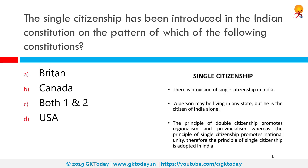The single citizenship has been introduced in the Indian Constitution on the pattern of which of the following constitutions? The correct answer is both Britain and Canada. The Constitution of India has established a single and uniform citizenship for the whole of the country. A citizen in a federal state owes allegiance firstly to the unit and secondly to the union, as there are two sets of government in a federal polity.